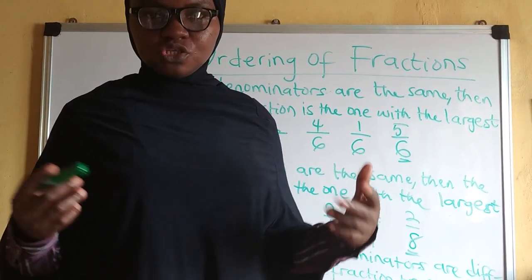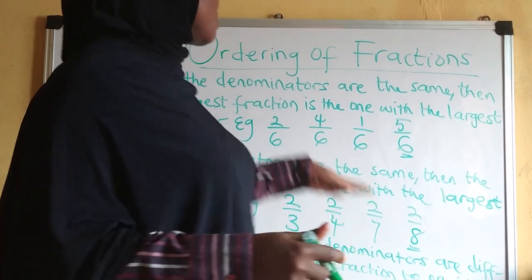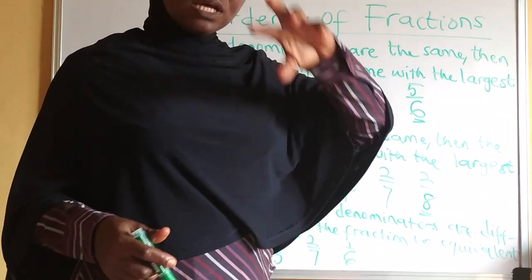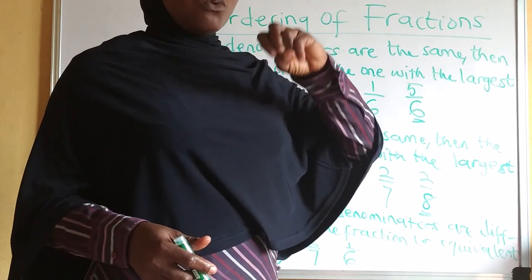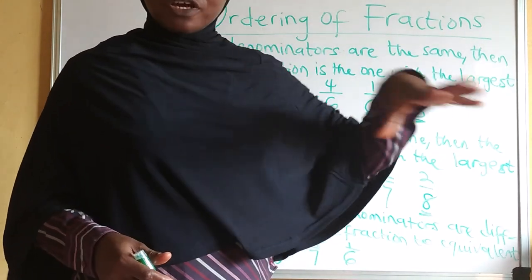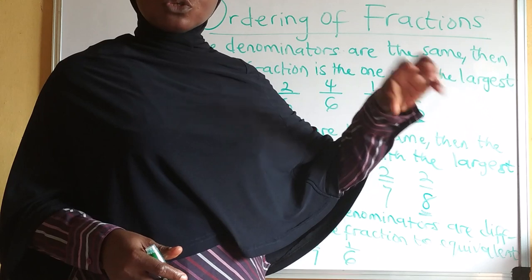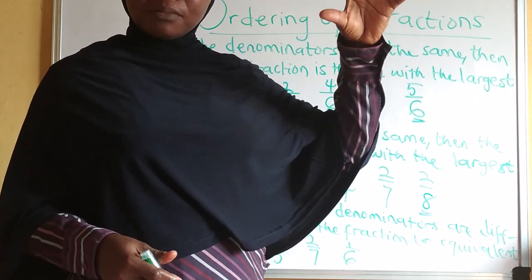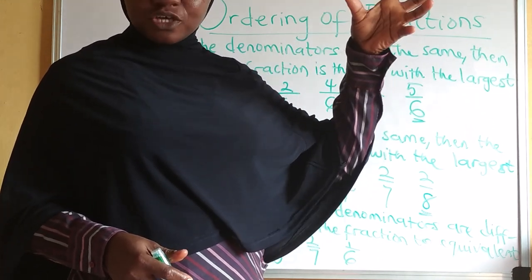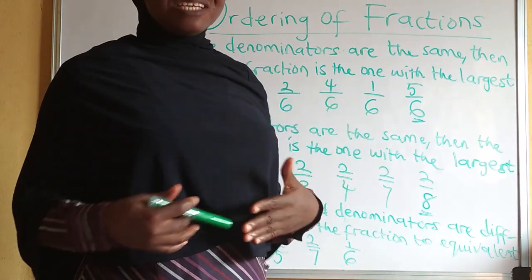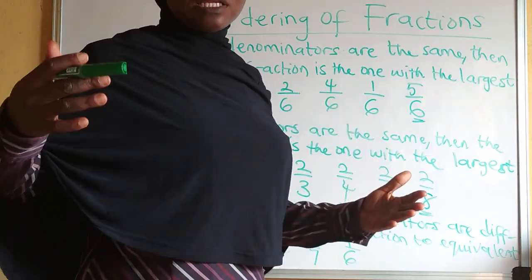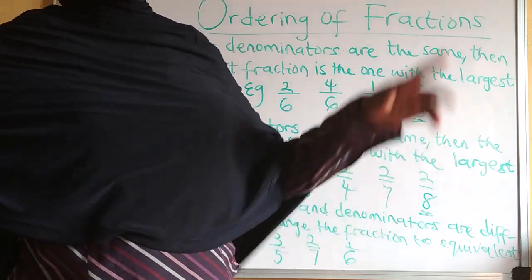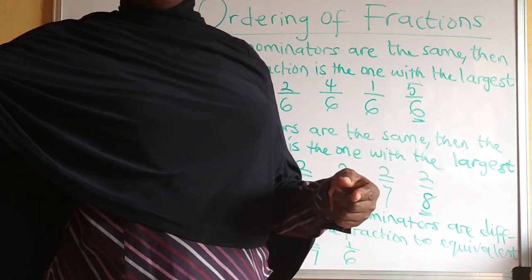Today's class will be looking at how we can order fractions. We want to know, given a set of fractions, how we can detect the one that is the highest fraction and the smallest fraction. In some cases you'll be given a set of fractions and asked to rearrange them in ascending order — ascending order means you start from the smallest one to the biggest one.